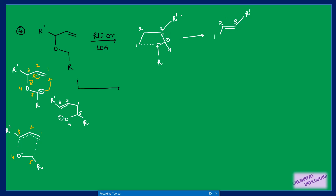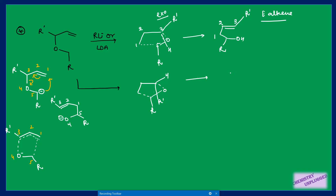When R' is drawn in the exo direction in the transition state to provide maximum stability, the product automatically forms as E-alkene. The lower energy transition state corresponds to exo placement. If R' is placed in the endo direction (pointing downward), then after bond formation H goes to one side and R' ends up in the Z position, giving Z-alkene. But this transition state is less stable, so E-alkene is the major product.